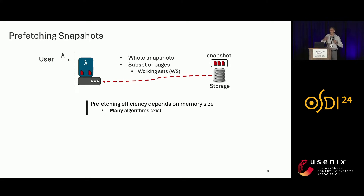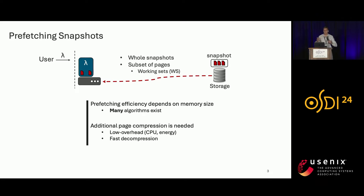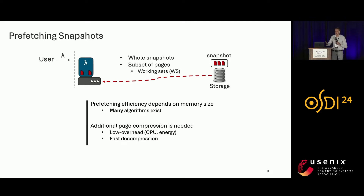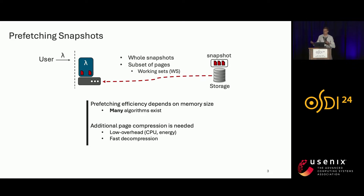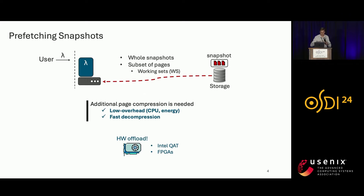Many algorithms have been proposed to make prefetching efficient. Independently of the underlying algorithm, additional page compression is very desirable, as it enables even faster prefetching and further reduces cold boot overhead. This compression must have low overhead and also support very fast decompression — so using hardware offload is a natural solution here.